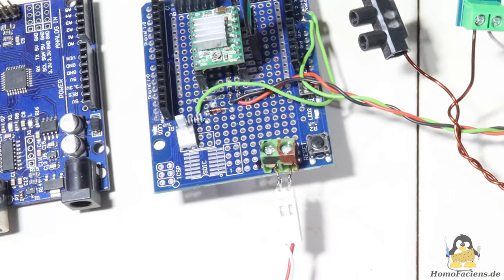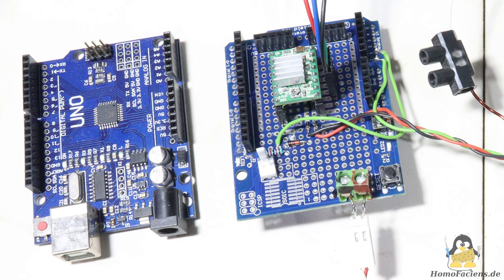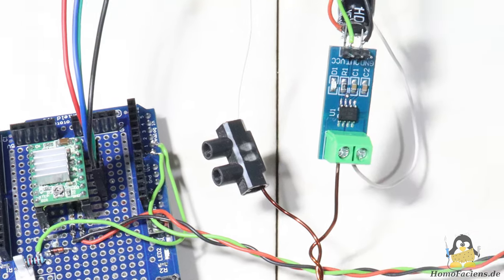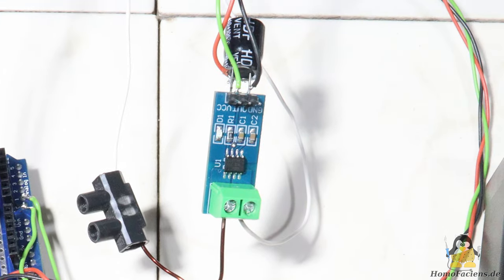The stepper motor is controlled via an ATMEGA 328 microcontroller with an A4988 stepper motor driver. So that the microcontroller can detect whether the wire is touching the workpiece or not, there is a sensor in the circuit that can measure currents of up to 30A.